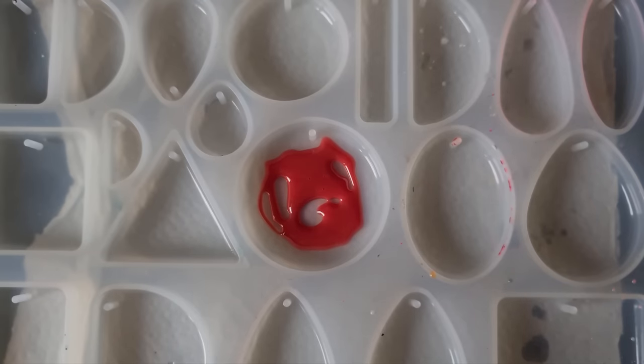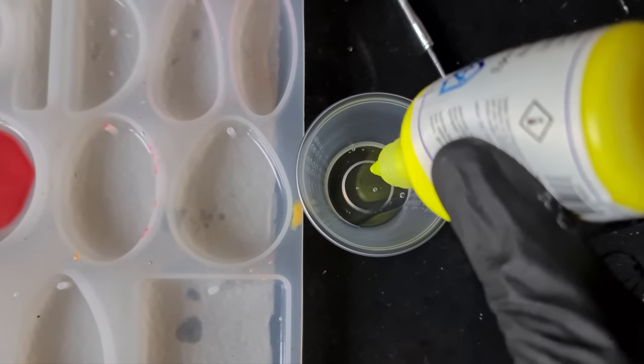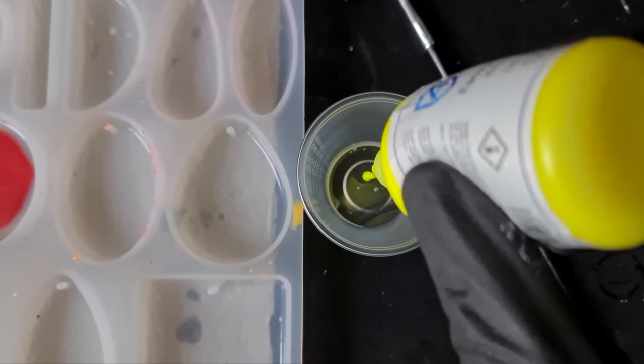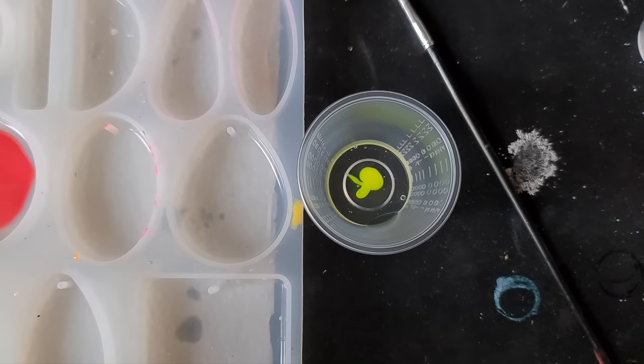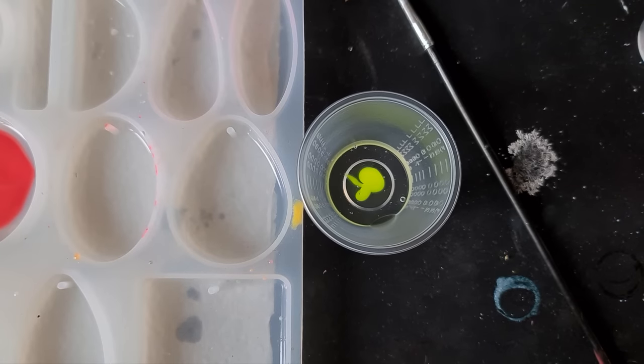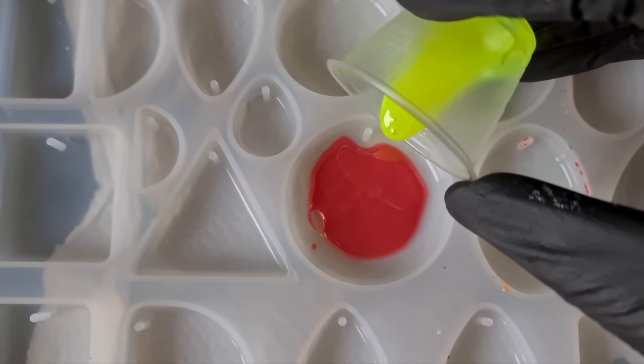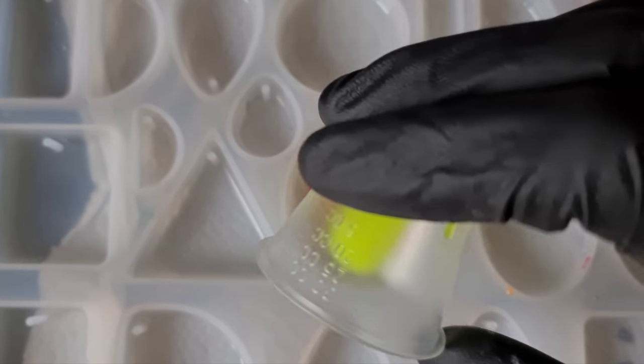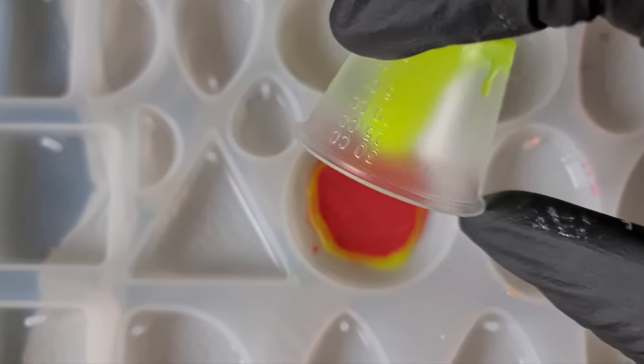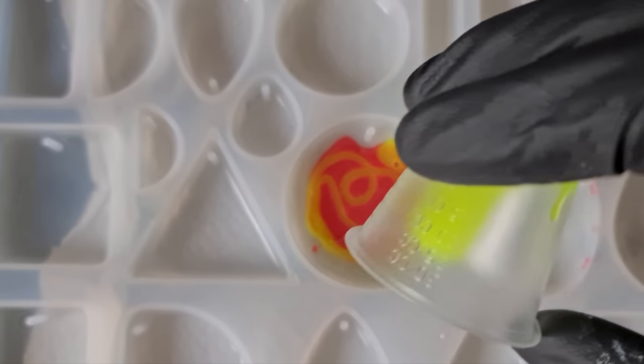To this cup I'm just going to add some of my neon yellow. This isn't opaque, it's quite translucent. Again, just mix that up and then we just add that in with the red and go over the top of the red as well. It won't matter, we are still going to stir this.